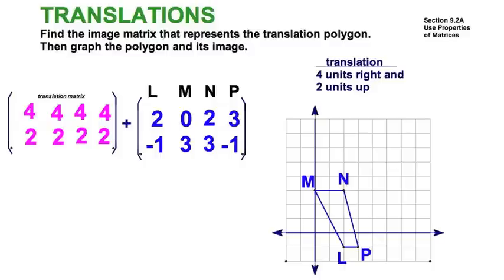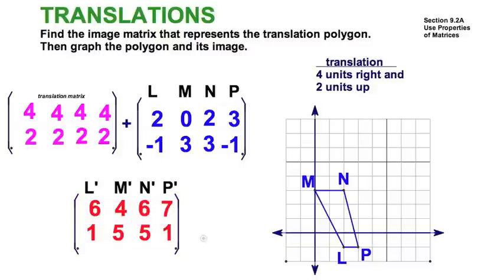Because as we remember in our matrix addition, we are going to take a two by four matrix, add it to a two by four matrix, and our sum will be, again, a two by four matrix. Very simply, four plus two is six, two plus negative one is one, four plus zero is four, etc. So you can see you're just going to take each element from the translation matrix, add it to each corresponding element in the pre-image matrix, and the sum is the element in the image matrix.